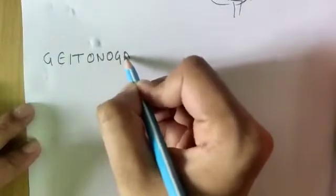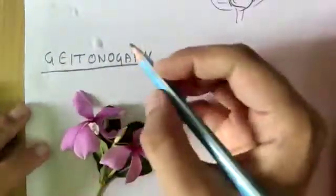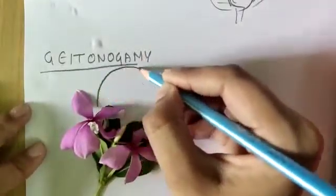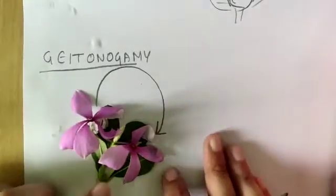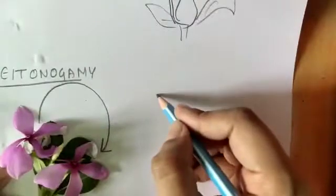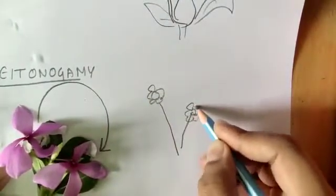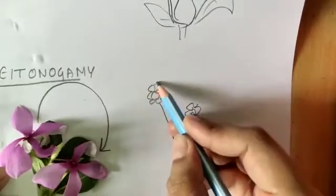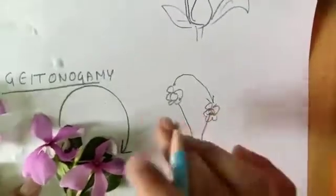Another one is geitonogamy. Geitonogamy happens when the pollen grain of a flower lands on the stigma of another flower on the same plant. Let's say there's a flower here on a plant and another one is over here. So if the pollen grain of this flower lands on the stigma of this other flower on the same plant, it's known as geitonogamy.